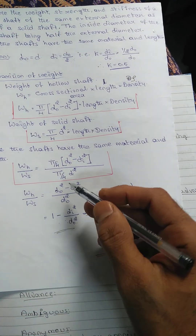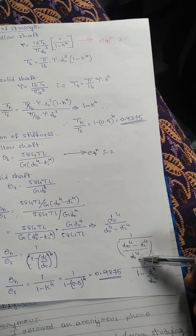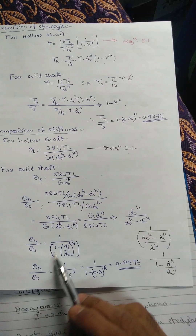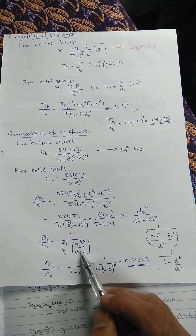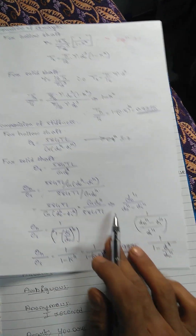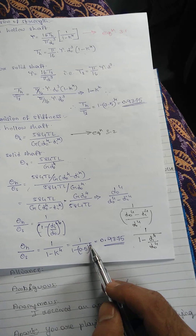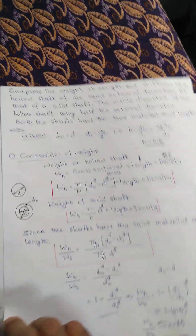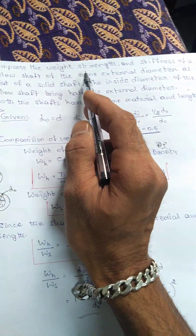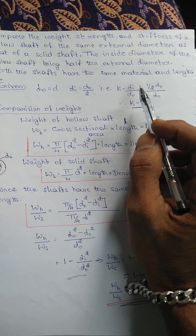Rearranging, stiffness ratio = 1 / (1 - (d_i/d_o)^4) = 1 / (1 - k^4) = 1 / (1 - 0.5^4) = 1 / 0.9375 ≈ 1.0667. So the hollow shaft is stiffer per unit weight. These are the three comparisons of weight, strength, and stiffness for hollow versus solid shafts with the same material and length.